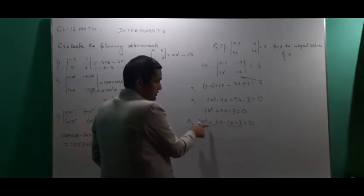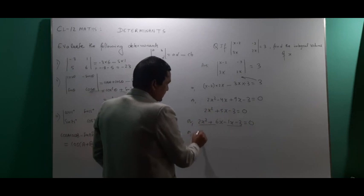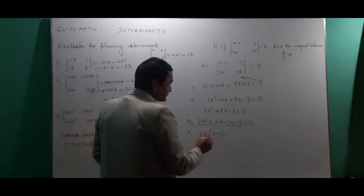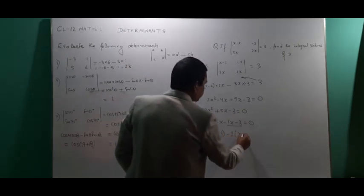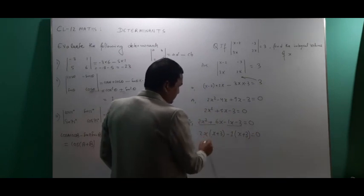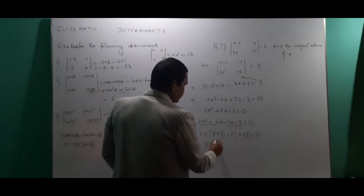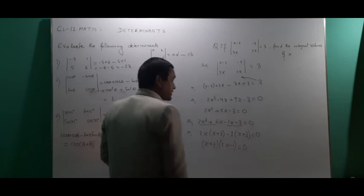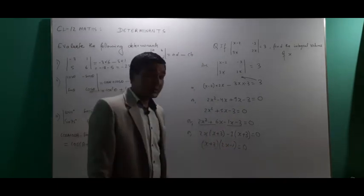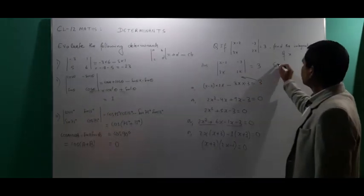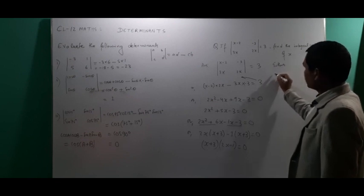Taking common factors from each group: 2x is common from the first group, leaving x+3. Then -1 is common from the second group, also leaving x+3. This gives us (x+3)(2x-1) equals 0.